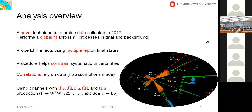A quick overview of our analysis: it's a novel technique used to examine data collected in 2017. It performs a global fit across all processes, including signal and background. We probe EFT effects using multi-lepton final states. The procedure helps constrain systematic uncertainties, and all correlations rely solely on the data, so no assumptions are made. We use channels TTLnu, TTLL, TLLQ, TTH, and THQ, where we ignore the Higgs to bb-bar decay. The leading Higgs decays considered are W, Z, and tau pairs.